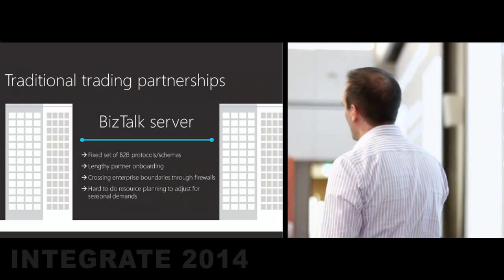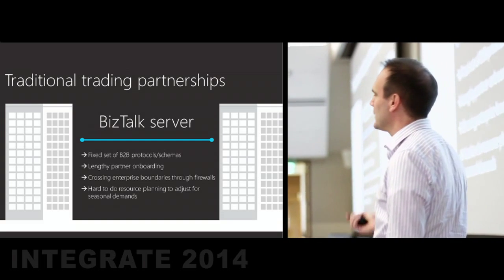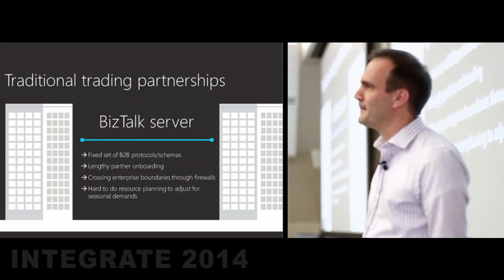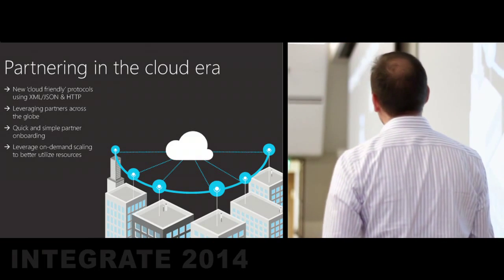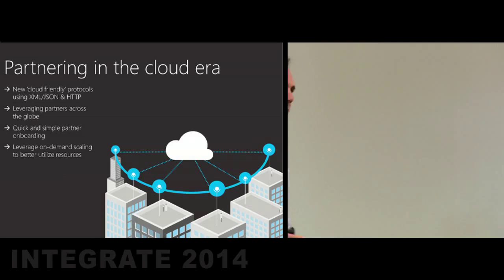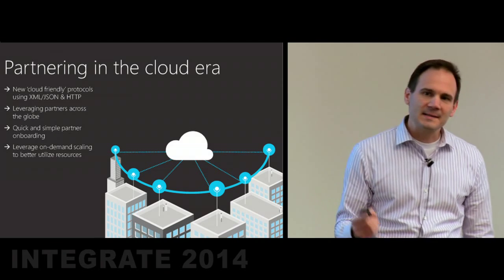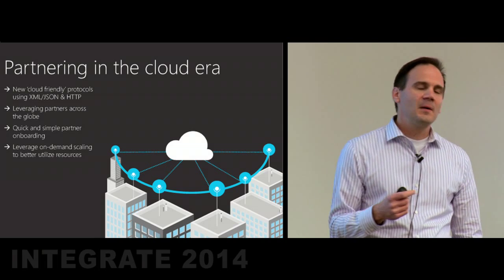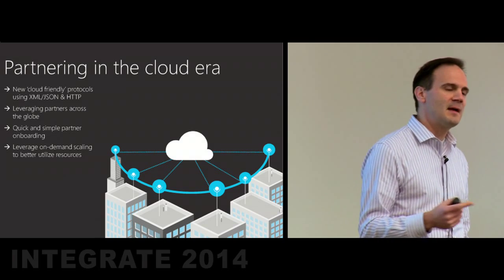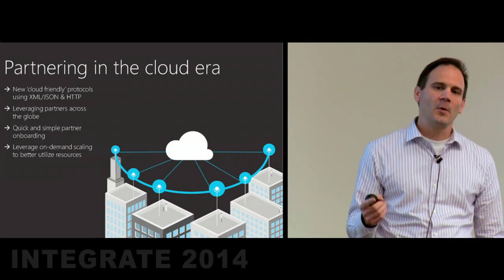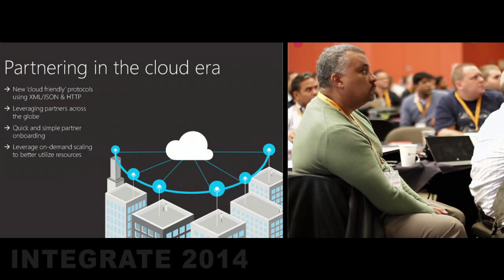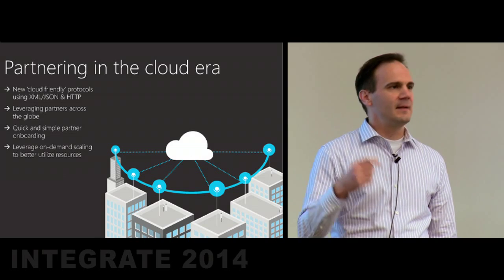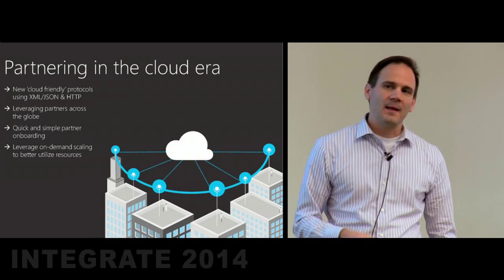Maybe it was hard without the cloud to plan for seasonal spikes and seasonal demands with the partnership. You had to stand up all of the infrastructure necessary to support maybe a holiday season sale or a particular event. Partnering in the cloud era looks very different — many more partners need to be connected, and we want to see a quicker, more simple partner onboarding process that can happen in hours or days, not weeks or months. We also see the evolution of protocols — more cloud-friendly protocols with XML and JSON support over HTTP, traversing firewalls through port 80 to make data exchange much simpler, and with cloud you can take advantage of auto-scaling environments that scale up and down on demand.